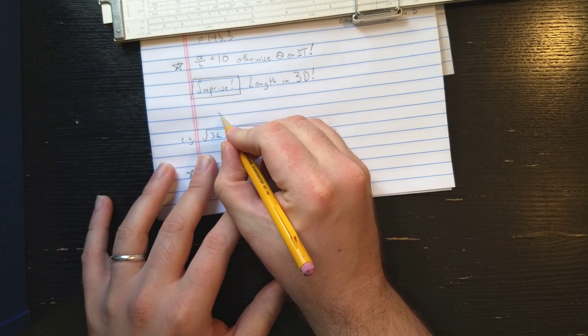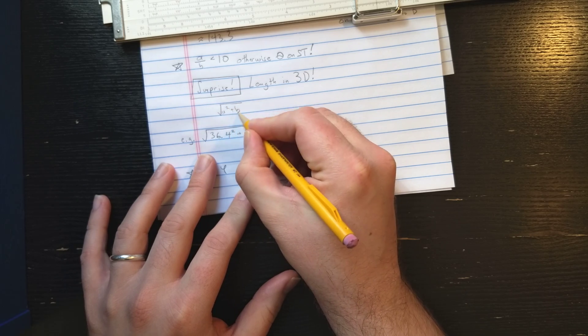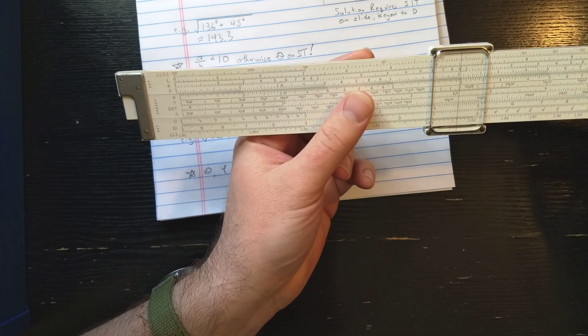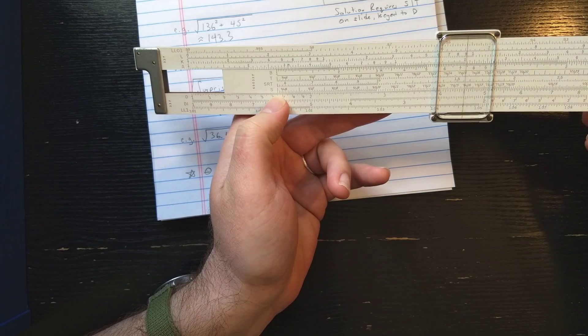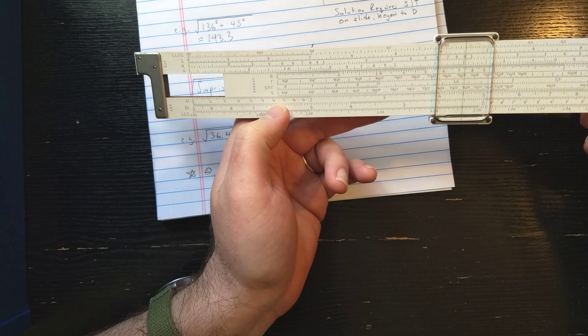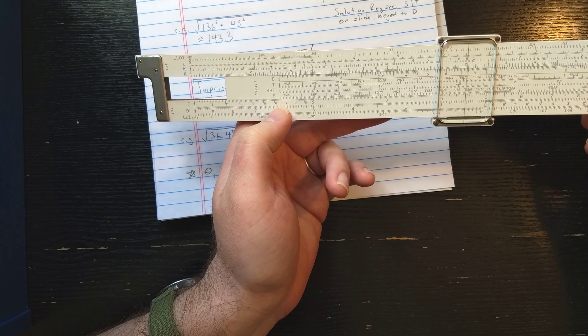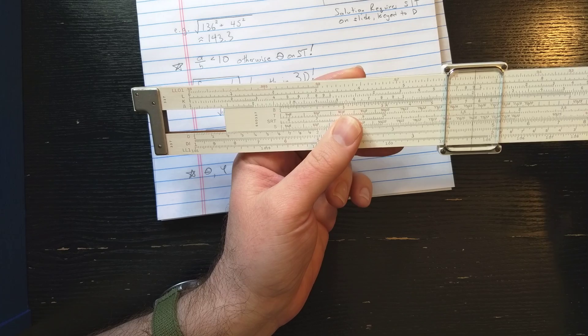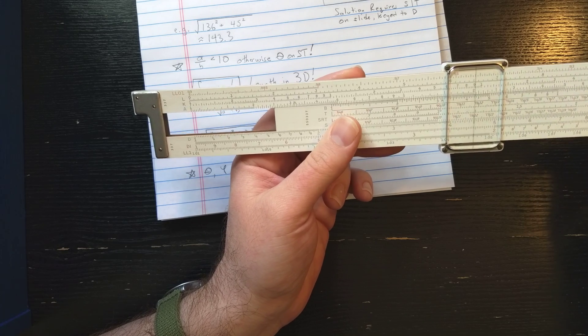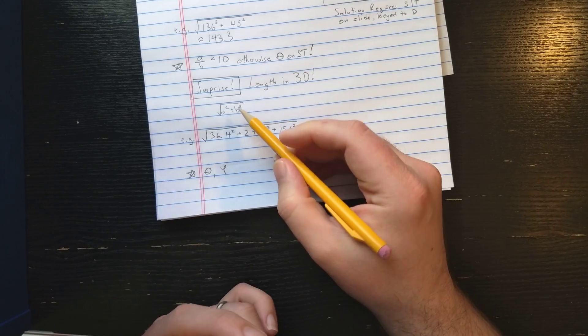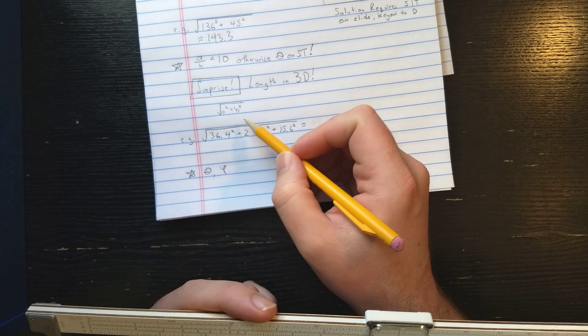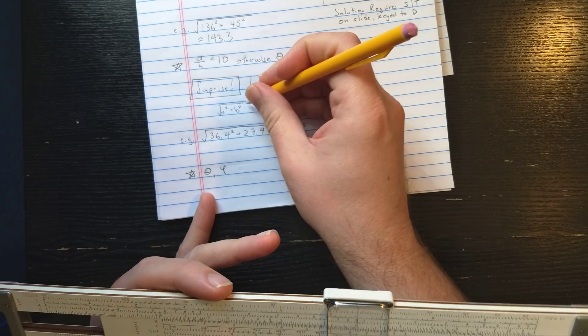So you take square root A square plus B square. Once you do that, the result is reading under the index of the S scale somewhere on D. But that's exactly how you start. You start by putting the index essentially over A. So you're going to use this result of your first computation as the first number in the second computation. So that's going to get squared.